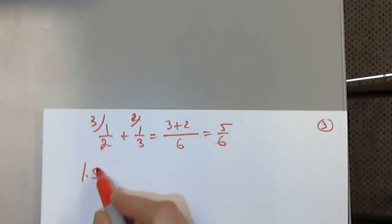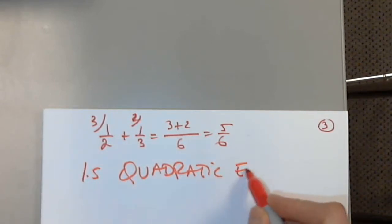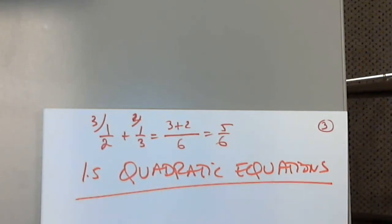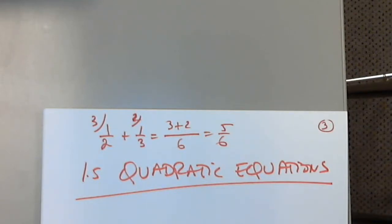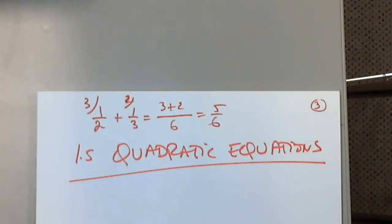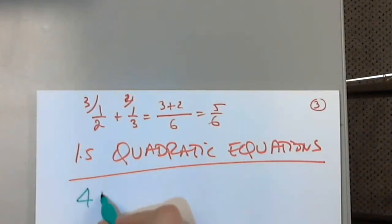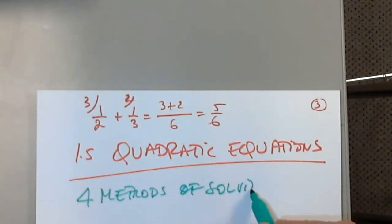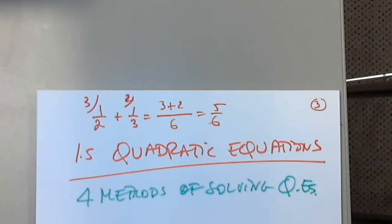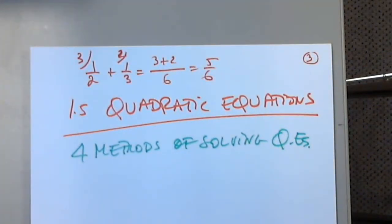Quadratic equations, section 1.5. There are four methods of solving quadratic equations. Before going into those methods, can anyone give us an example of a quadratic equation? In general we write ax squared plus bx plus c equals 0, where a, b, and c are real numbers.